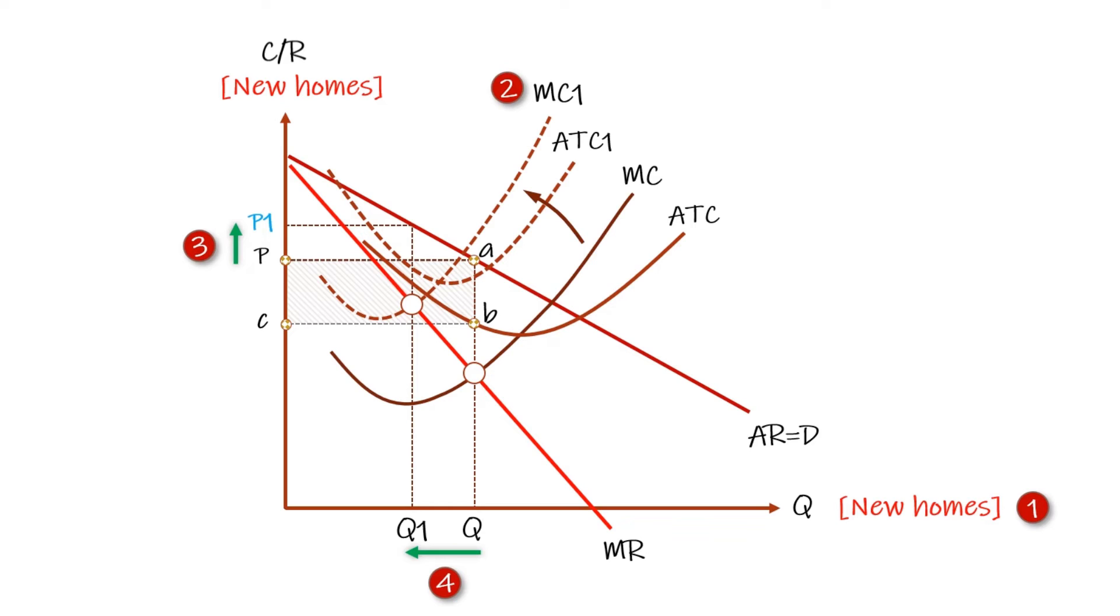The output of houses is likely to fall to Q1. How much depends on the PED and the gradient of the AR curve. Profits before the cost increase are shown as the rectangle P-A-B-C.